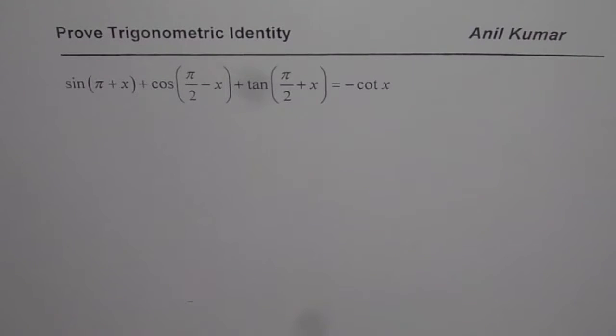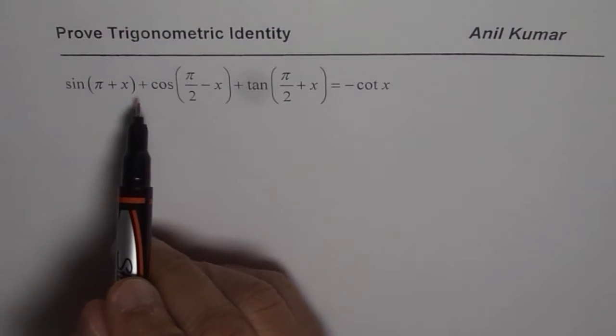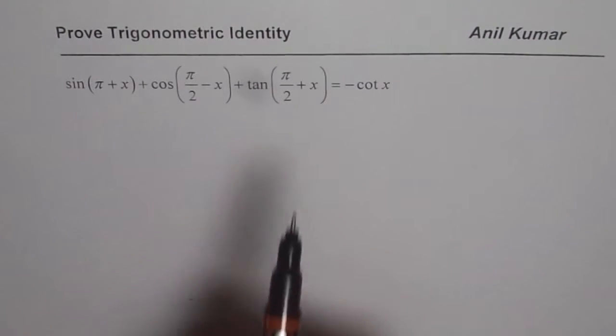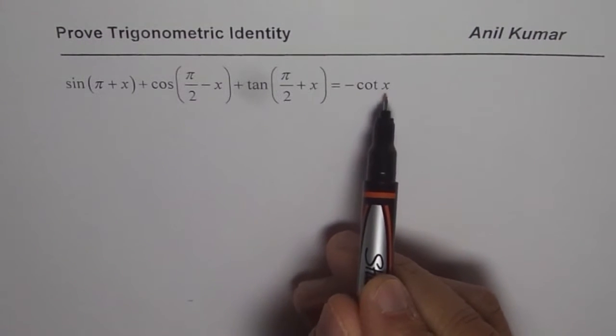Question before us is sine of pi plus x plus cosine of pi by 2 minus x plus tan of pi by 2 plus x equals minus cotangent of x.